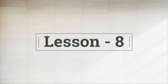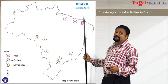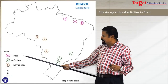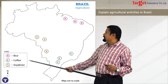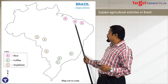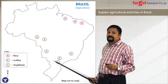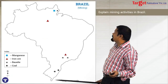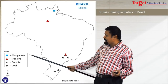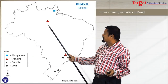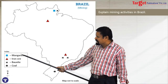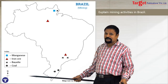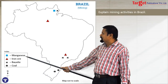Lesson number eight is about agriculture. For the question — explain the agriculture in Brazil — you can show few major crops: rice, coffee, and soya bean, marking rice-cultivating areas, soya bean areas, and coffee areas. Brazil is a major coffee-producing part of the world. For mining activities in Brazil, show few important minerals and their locations — manganese, iron ore, bauxite, and coal. You may not be able to show all, but mark at least some major places and minerals.